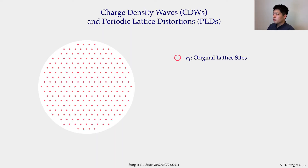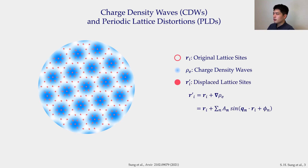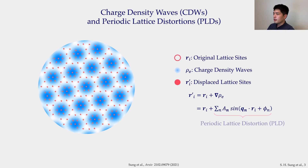To back up a little, as I said, TaS₂ hosts CDWs and PLDs that are responsible for its exotic properties. Here I am showing a perfect lattice of positively charged ions. If the crystal has CDWs in it, there is a periodic fluctuation of charge density. You can imagine that the lattice will displace along the charge gradient. Because the charge density is periodic, so will be the displacement — this is a PLD. Note that the displacement is exaggerated in this animation; typically displacements are smaller than 0.1 ångström.